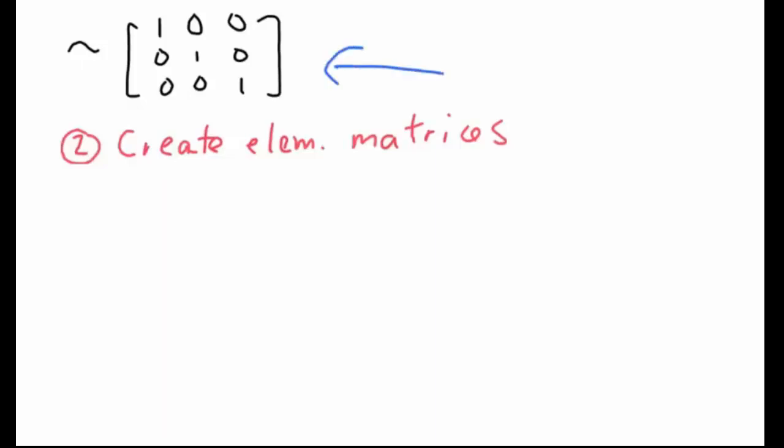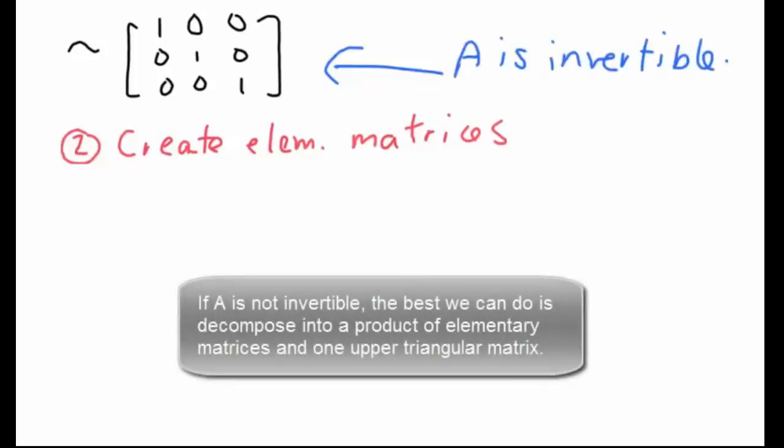And that's going to give us the following identity matrix. Because we get the identity matrix, we automatically know A is going to be invertible. This is important for us because it means that we actually can decompose A into a product of elementary matrices.